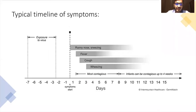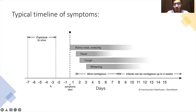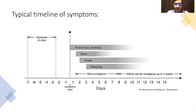A typical timeline of symptoms is shown in this figure. Whenever a child starts showing symptoms, it is known that five to seven days prior to symptoms the child has already been exposed to this virus. The first symptom to appear is upper respiratory tract symptoms like runny nose and sneezing, followed by fever, cough, and further signs of lower respiratory tract infection. These children are typically most contagious during the first seven days of illness.